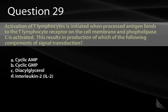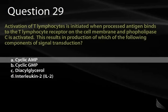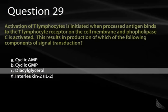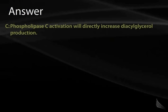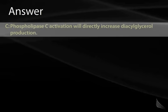Question 29. Activation of T-lymphocytes is initiated when processed antigen binds to the T-lymphocyte receptor and phospholipase C is activated. This results in production of which component of signal transduction? A, cyclic AMP. B, cyclic GMP. C, diacylglycerol. Or D, interleukin-2? The correct answer depends on knowledge of the G-sub-Q pathway. G-sub-Q activates phospholipase C to split PIP2 into IP3 and DAG — diacylglycerol — making the correct answer C.